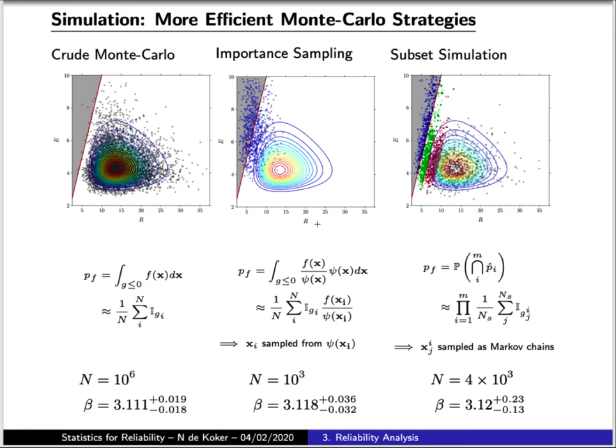So what I have here is a comparison of reliability determination for the same problem. On the left, using crude Monte Carlo, and in the middle, using importance sampling. And you'll see that I am able to get a beta value that is comparable in accuracy using a thousand function determinations instead of a million. Done intelligently, this can be incredibly powerful.